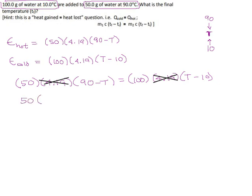And now we have a much nicer formula or equation. We have 50 times 90 minus T equals 100 times T minus 10.